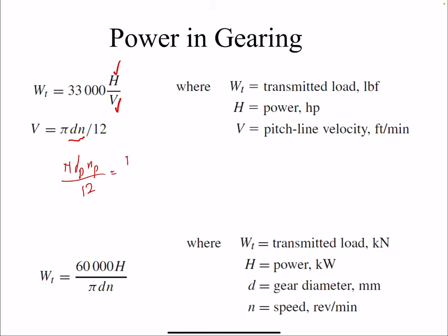If you use the gear, both the diameter and RPM should be for that gear. From this we can find the tangential component in pound-force. In SI units, due to the unit conversion, there is a constant value of 60,000 that comes into play — it doesn't have significant physical meaning, it's just a conversion constant. Similarly, we have power in kilowatts, diameter in millimeters, and speed in RPM.